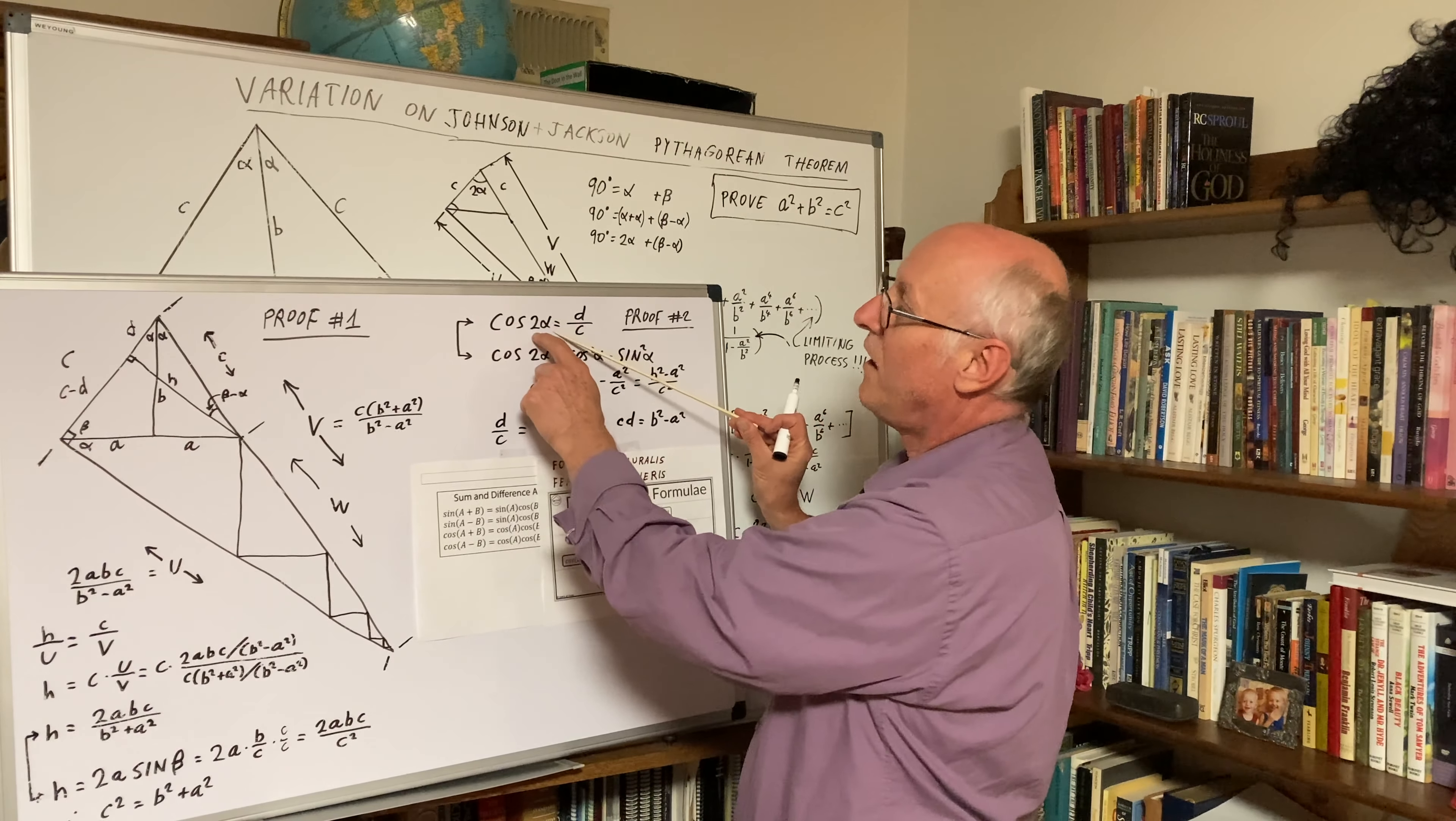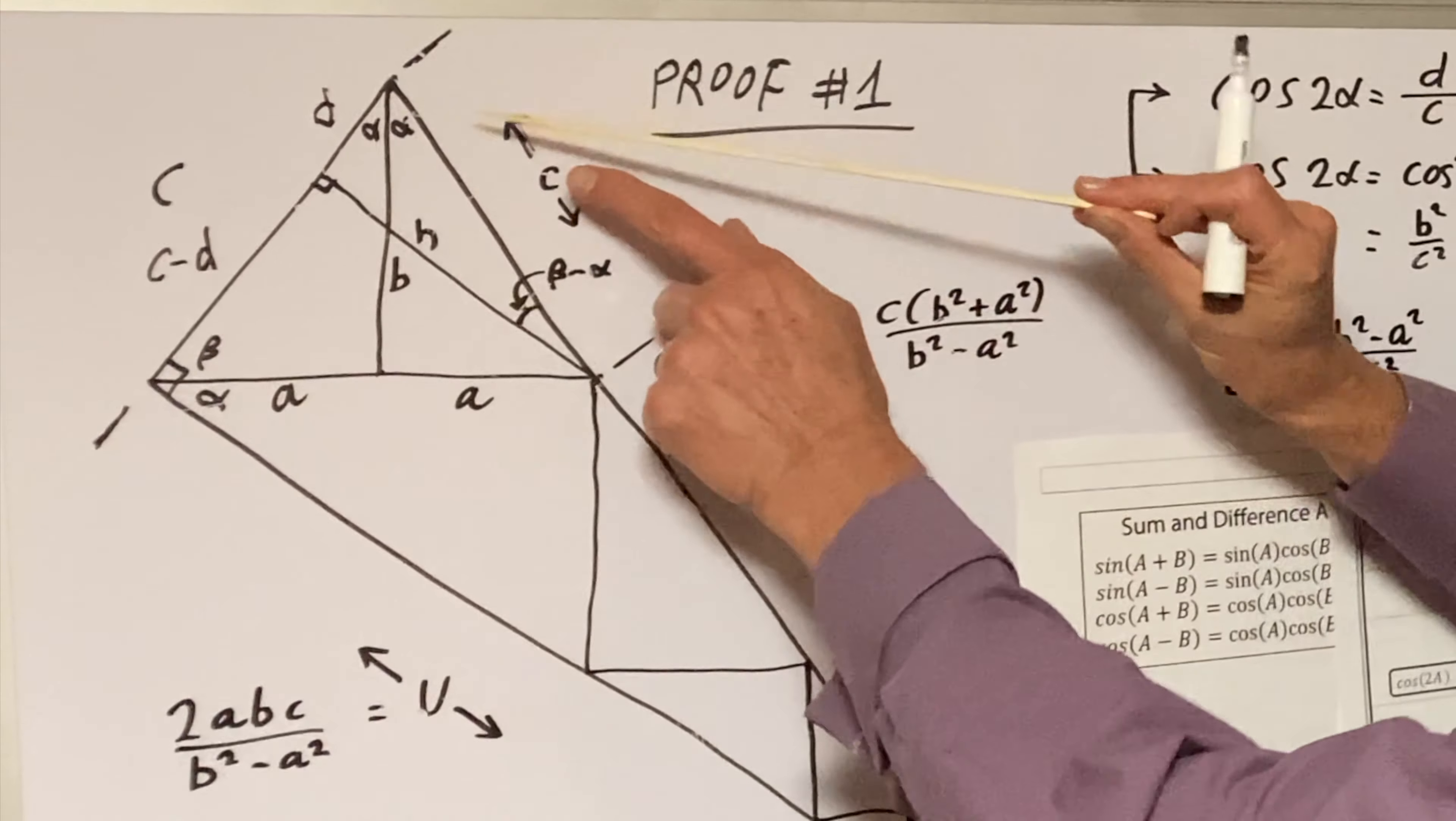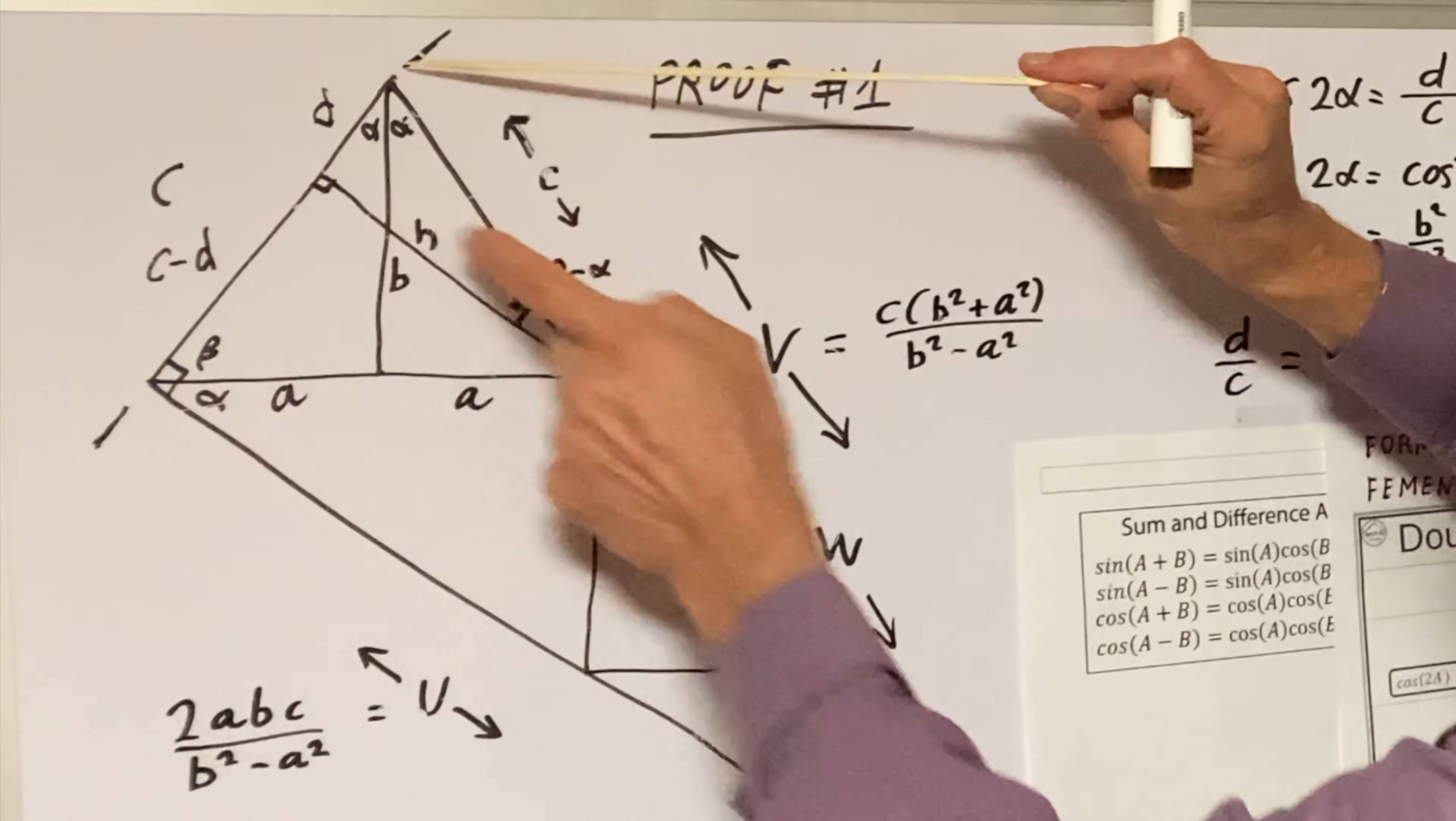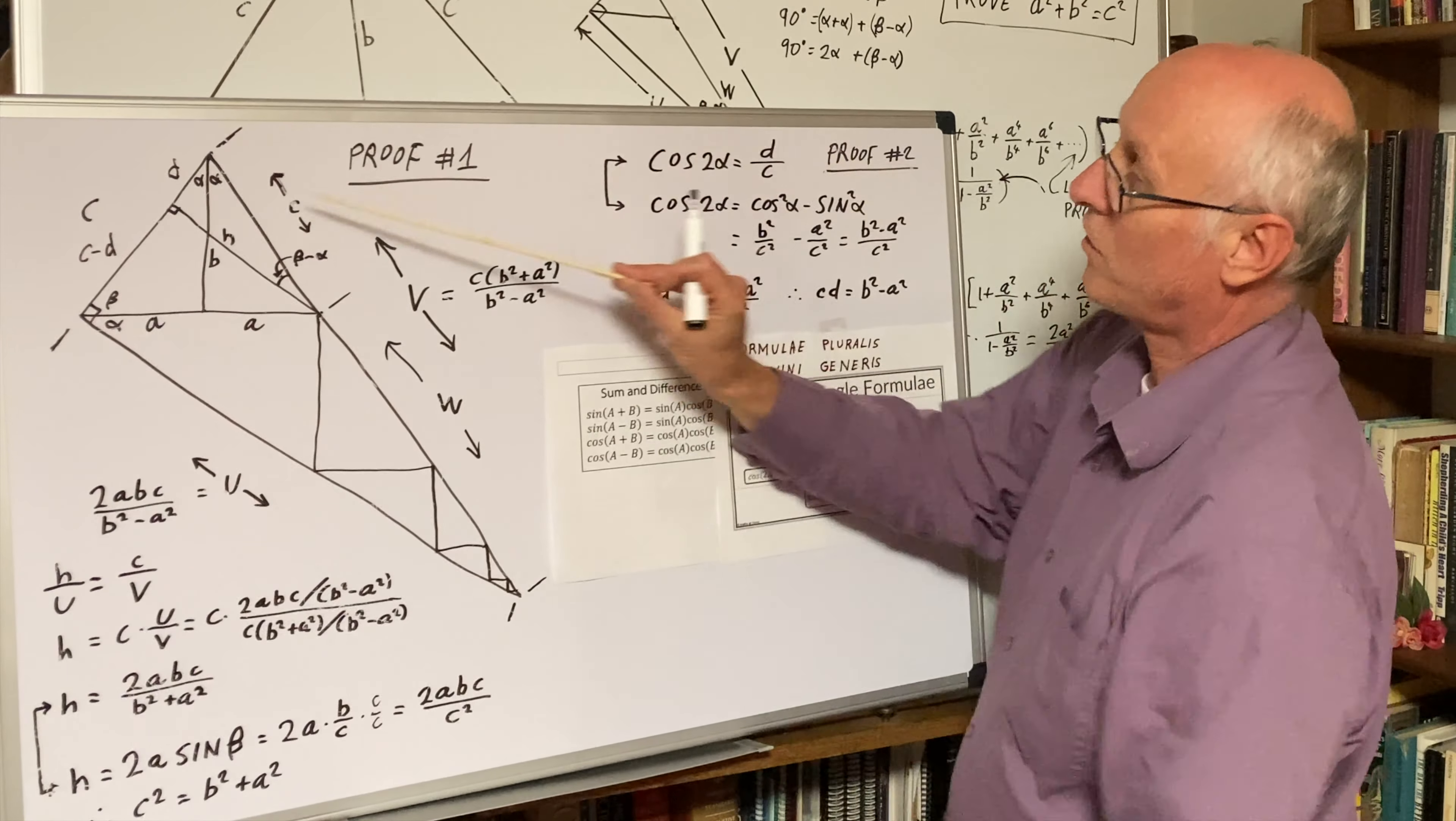Cosine of 2 alpha, that's D over C. Here's cosine of 2 alpha. Here's 2 alpha. And that's C. No, that's D over C. That's adjacent over hypotenuse. This is a right angle. That's one way to look at it.